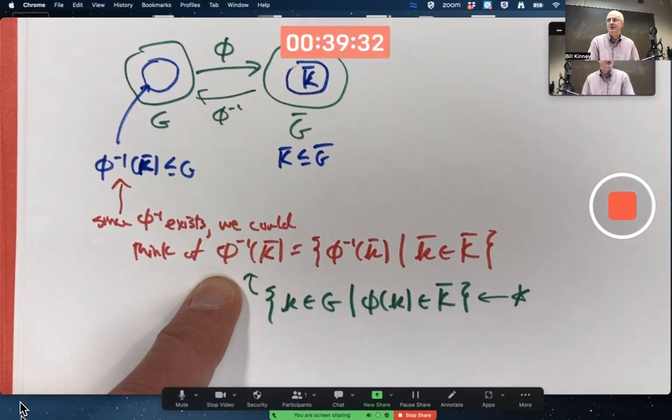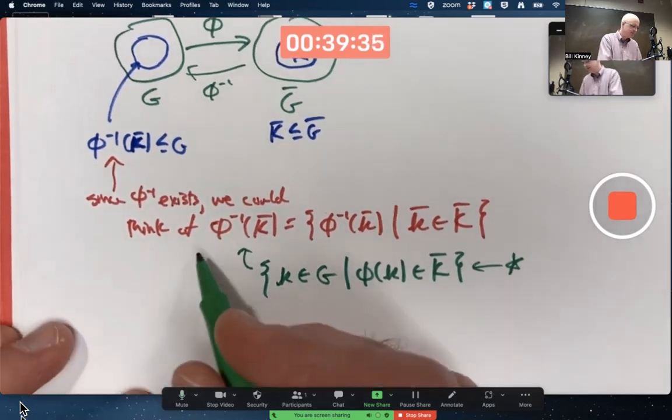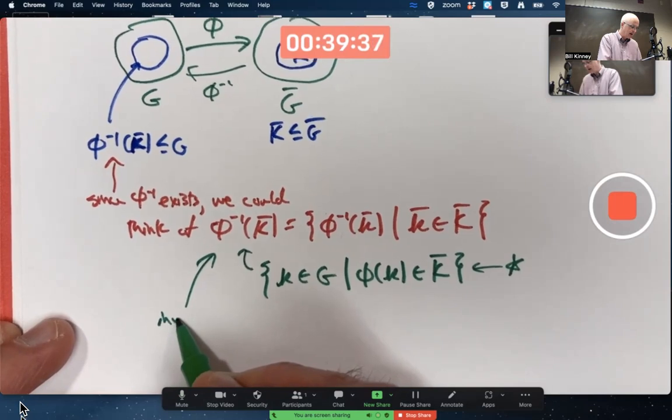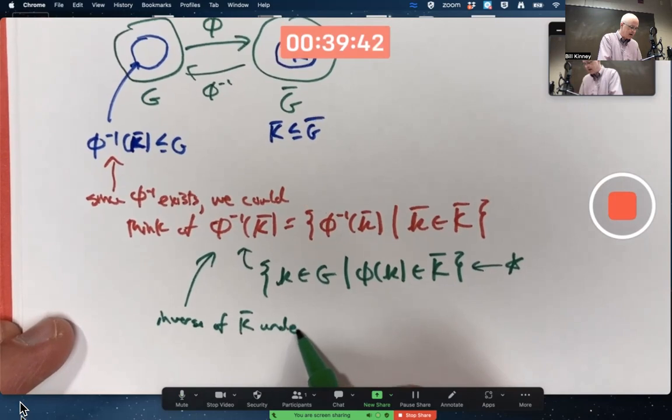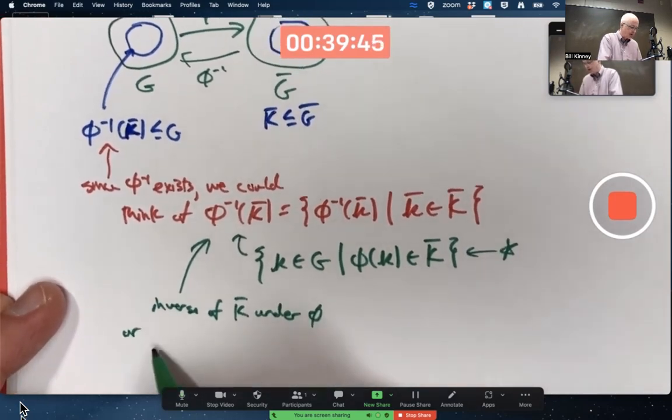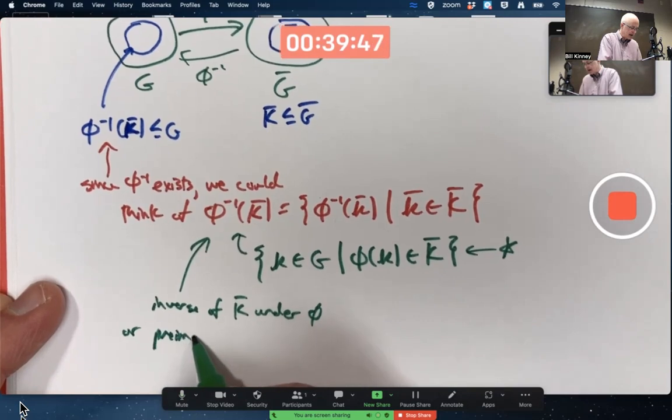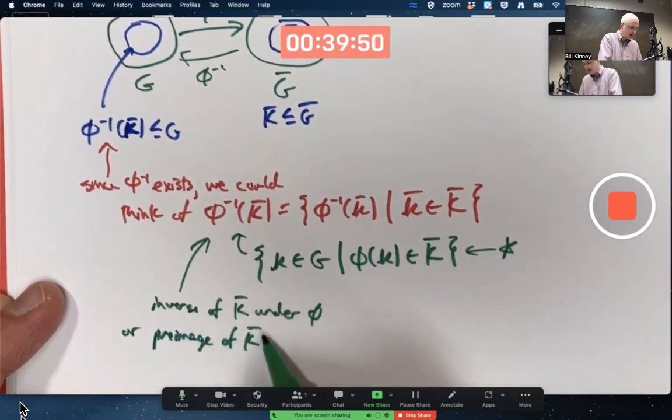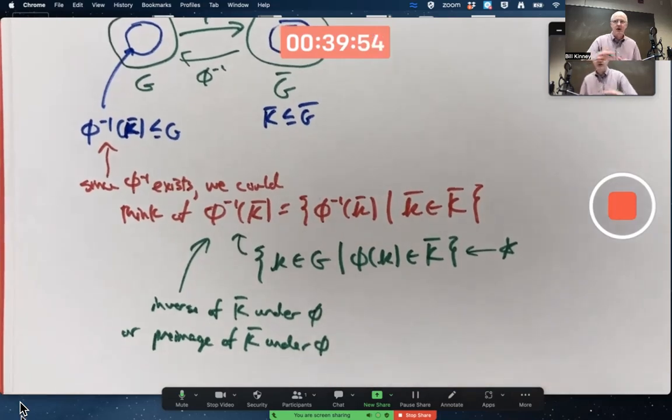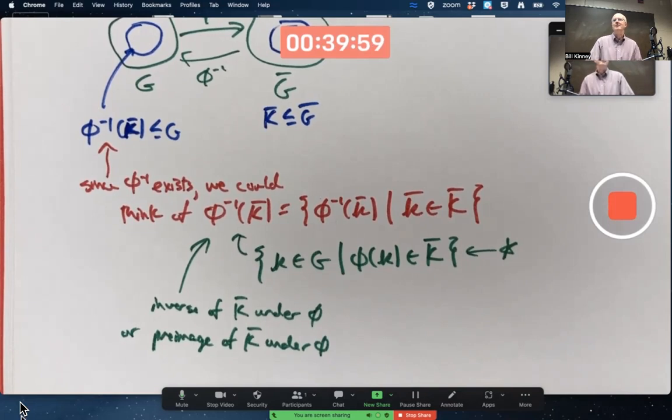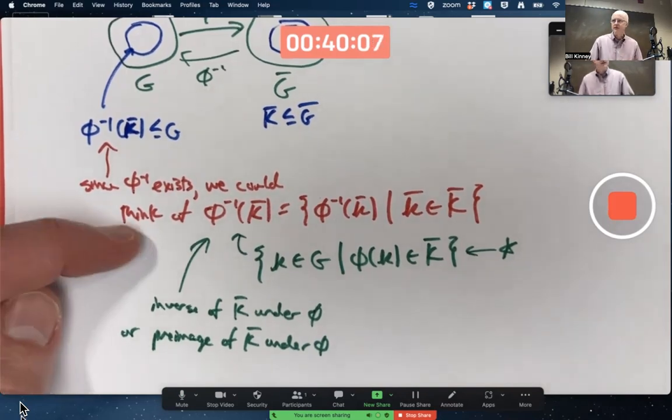In such a situation, there's two names given for it. It's called the inverse image of K bar under φ or it's also called the pre-image of K bar under φ. Since φ inverse exists, I could also call it the direct image of K bar under φ inverse. But again, these ideas apply even when φ inverse doesn't exist and this notation is still used.